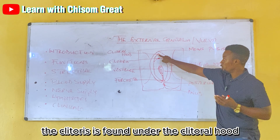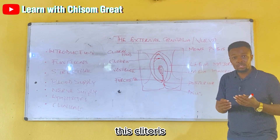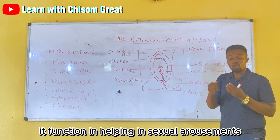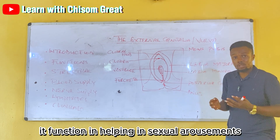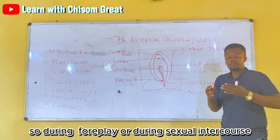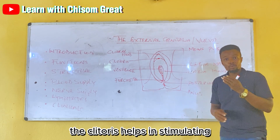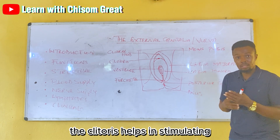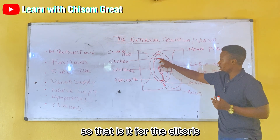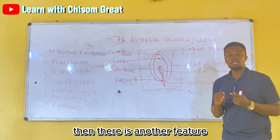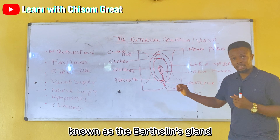We also have the clitoris. The clitoris is found under the clitoral hood. Its function is to aid in sexual arousal — during foreplay or sexual intercourse, the clitoris helps in stimulation and sexual arousal.